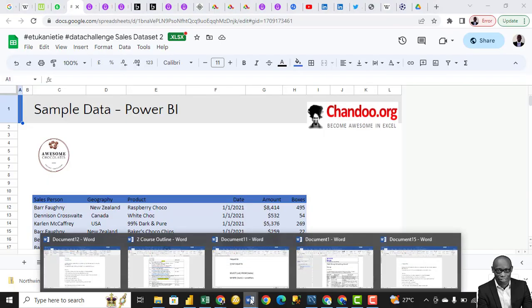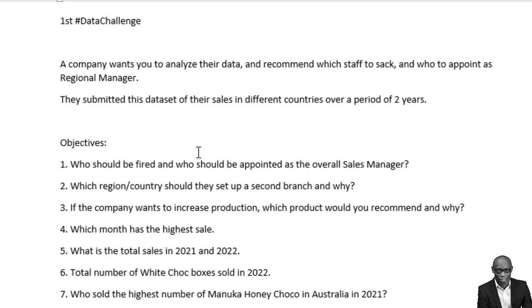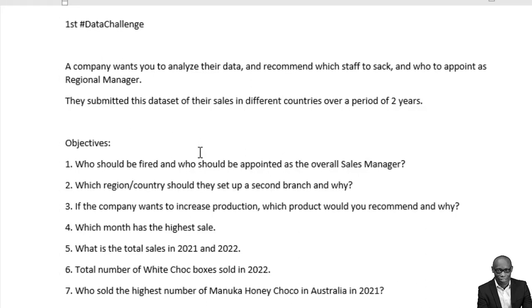For this particular project, a company wants to analyze their data and recommend which staff to sack or who to appoint as regional manager. They submitted a dataset of their sales in different countries over a period of two years. The objectives are: who should be fired, who should be appointed as the overall sales manager, and which region or country should they set up a second branch and why. If the company wants to increase production, which products would you recommend and why?